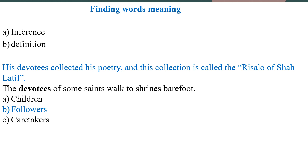Let's see how we can find the meaning of a passage. We have a line here, and the word is 'devotees.' We have three options from which we have to select the right one. The first sentence reads: 'His devotees collected his poetry, and this collection is called the Risalo of Shah Latif.'